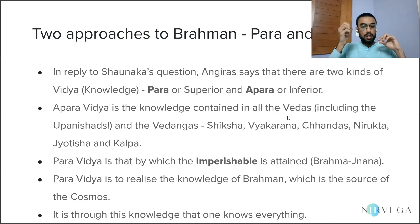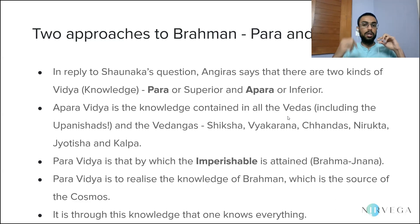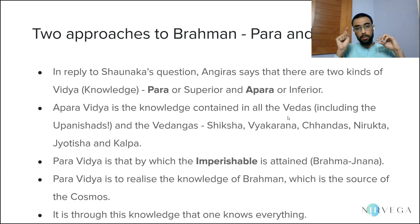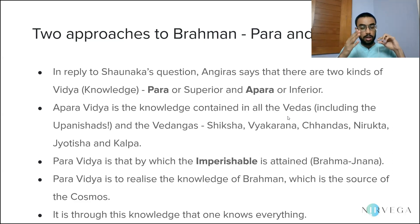Similarly, what Shaunaka is referring to is: what is the origin of everything? What is the source from which the entire creation has come about, so that by knowing that I can know everything else? The answer given by Angiras is that it is Brahman — the imperishable Brahman. It is only by knowing Brahman, because Brahman is the origin of the cosmos, that one can know the reality behind everything else.